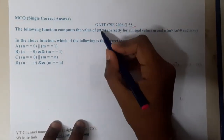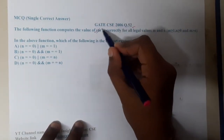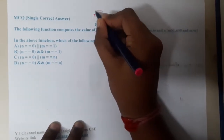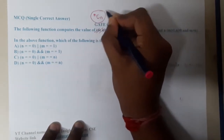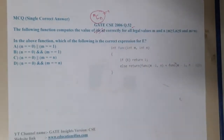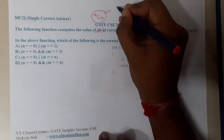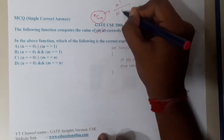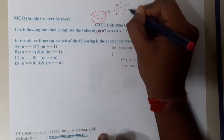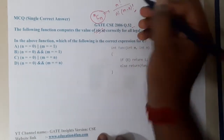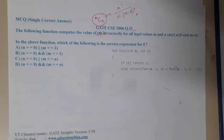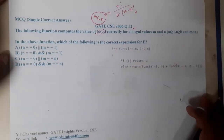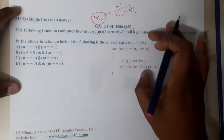There is a small correction in the question — this is not 'mn', it is 'mCn', the combination notation from permutation and combination. The formula for it is m factorial divided by n factorial into (m minus n) factorial.